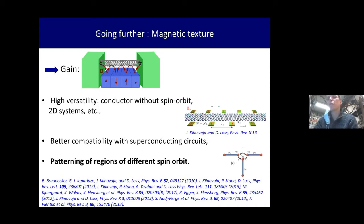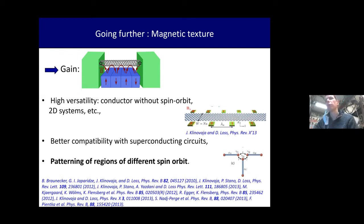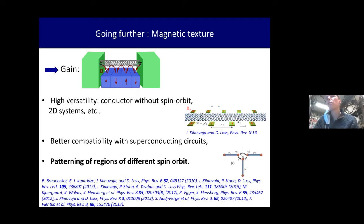This approach is highly versatile because it allows you to take your favorite conductor — the best one-dimensional system you can think of, even one without intrinsic spin-orbit interaction — and engineer a finite spin-orbit interaction in it. It's better compatible with superconducting circuits, including microwave resonators and superconducting contacts. Last but not least, you can in principle pattern regions with different spin-orbit interactions or different orientations, which can be very interesting for engineering exotic bound states or hinge states in these systems.